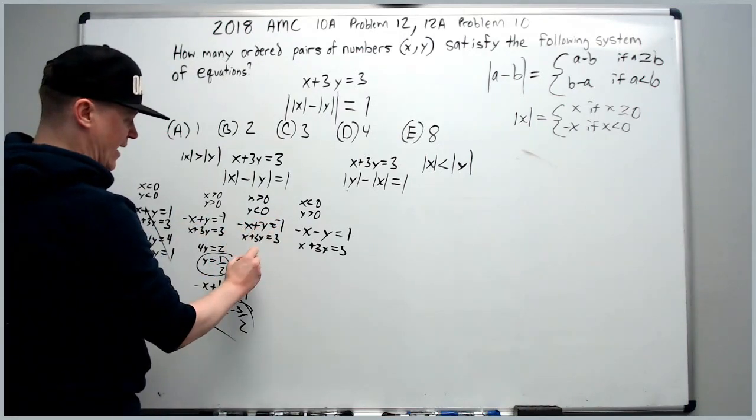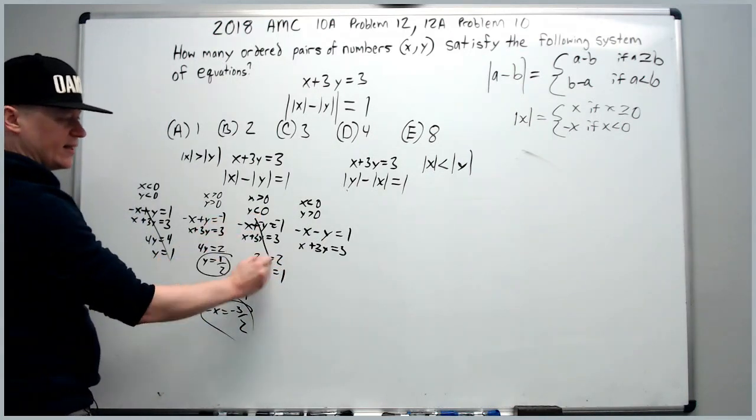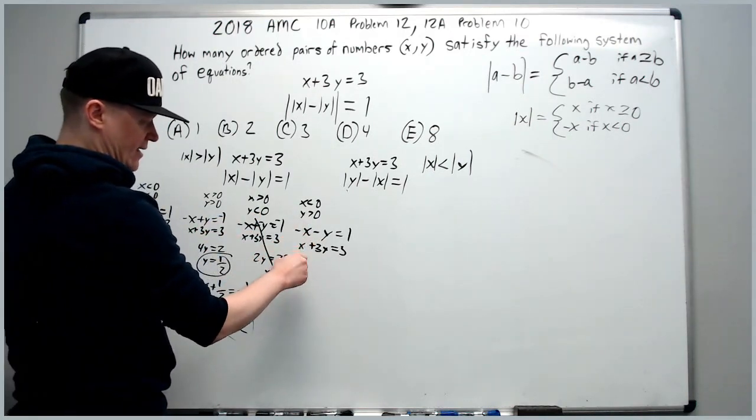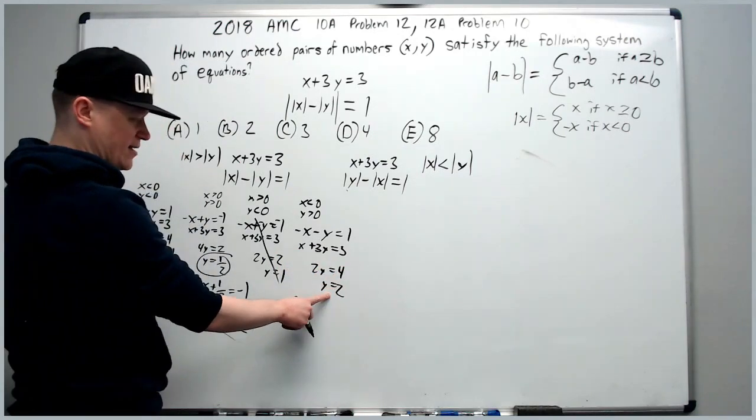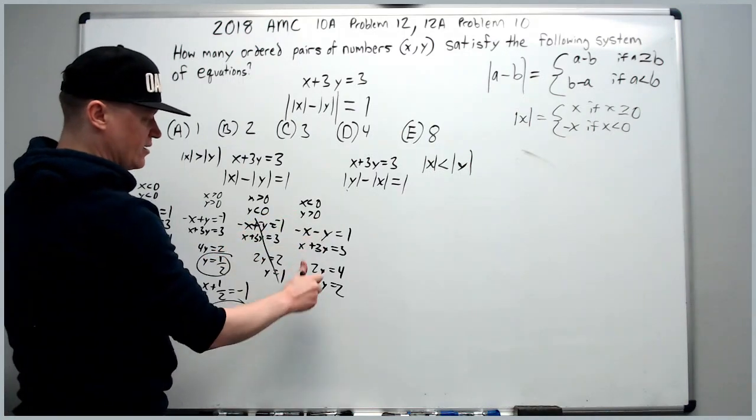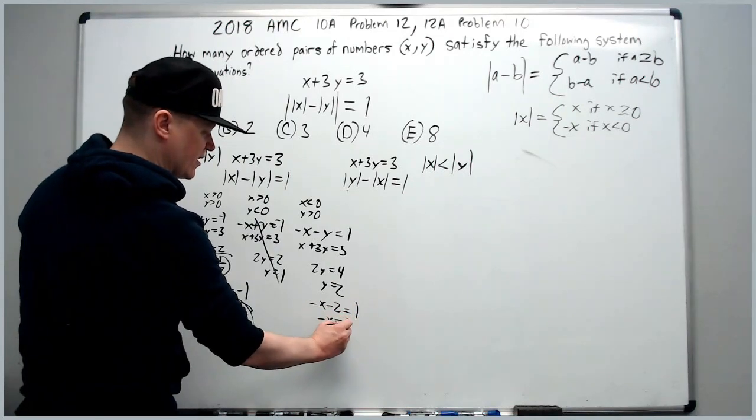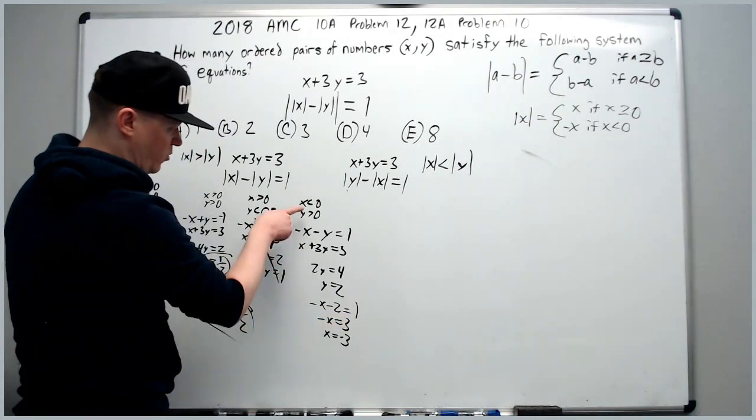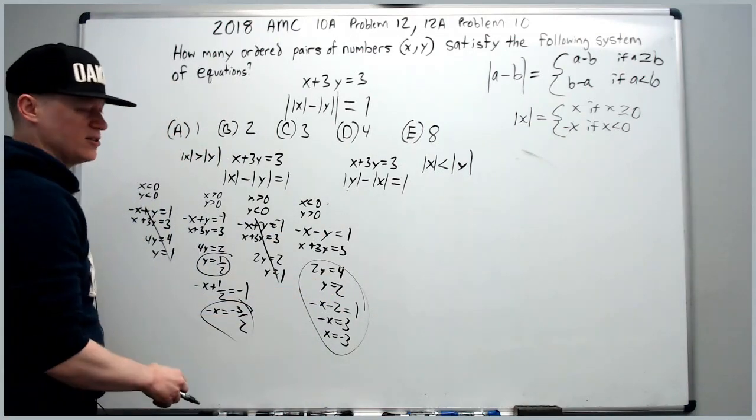Next one - add down 2y equals 2, y equals 1. No good. Next one, add down 2y equals 4, y equals 2. This time it's good because y is greater than 0. We plug in here to get negative x minus 2 equals 1, negative x equals 3, and x equals negative 3, which meets the requirement. So we get a second solution here.